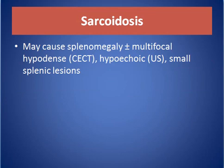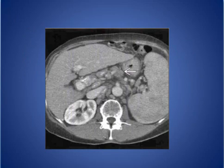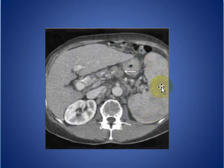Less common causes include sarcoidosis, which may cause splenomegaly with multifocal hypodense areas on contrast-enhanced CT and hypoechoic lesions on ultrasound; these lesions are small. As seen here, multiple abdominal lymph nodes and an enlarged spleen with heterogeneous enhancement and multiple hypodense areas in a patient with sarcoidosis.